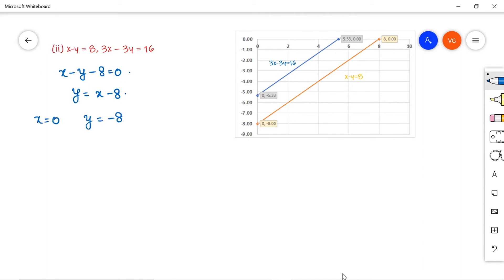We will get y is equal to minus 8. So suppose if you are taking x is equal to 8, y value will get 0. So these two points are enough to draw the graph. I am getting it as 0 comma minus 8 and 8 comma 0.